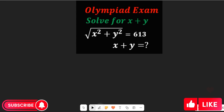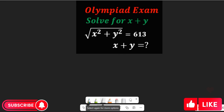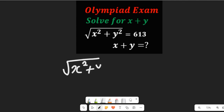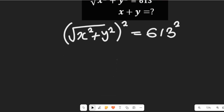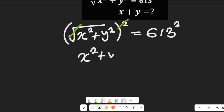Since the left-hand side carries a square root, we need to square both sides to eliminate it. Squaring both sides gives us the square root of x squared plus y squared, squared, equal to 613 squared. The square clears, and we are left with x squared plus y squared equals 613 squared.